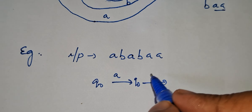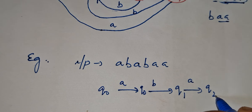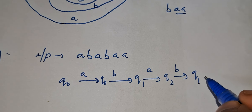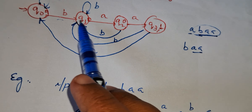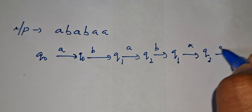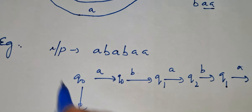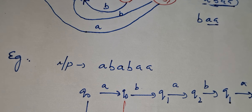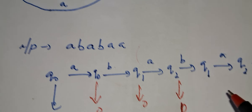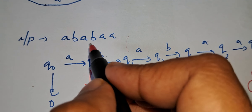Starting at q0: on 'a' stay at q0, on 'b' move to q1, on 'a' move to q2, on 'b' move back to q1, on 'a' move to q2, on 'a' move to q3. So for input 'ababaa': q0 outputs 0, q0 outputs 0, q1 outputs 0, q2 outputs 0, q1 outputs 0, q2 outputs 0, q3 outputs 1 — producing only one '1', because the string contains only a single occurrence of 'baa'.